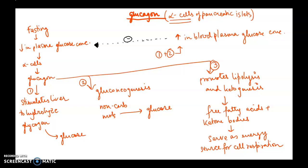Moving on to glucagon — glucagon and insulin are antagonists to each other; their functions are opposite. If insulin helps to lower blood glucose, glucagon helps to increase blood glucose level. Glucagon is released from the alpha cells of the pancreatic islets.